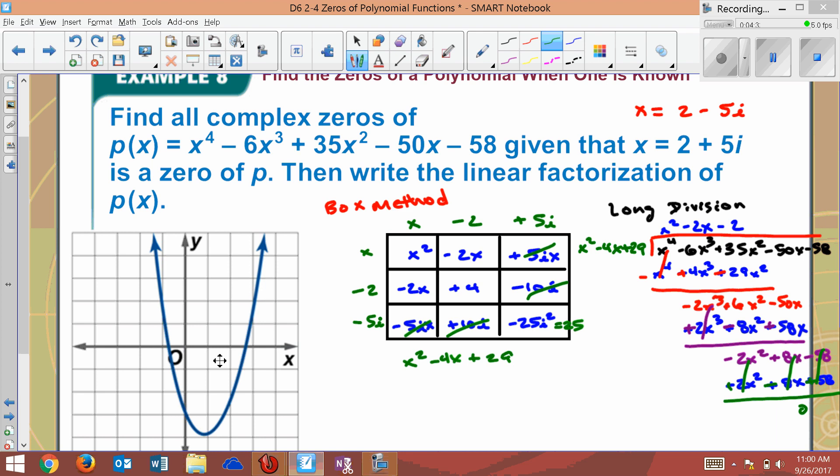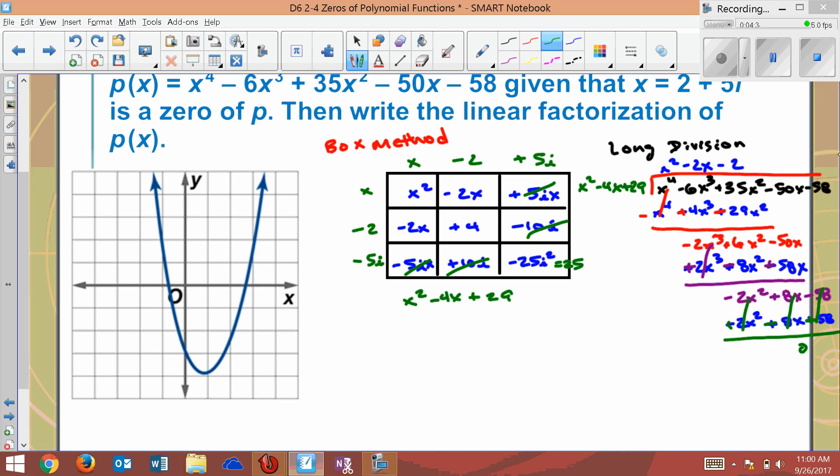So that is my real factor. So my two factors, doing all that, are x² minus 4x plus 29 and x² minus 2x minus 2. Those are my two factors here, my two quadratic factors. These are the imaginary we know of, these are the imaginary, and these are the real. Okay, so that's how this is written out.